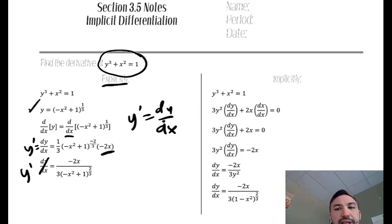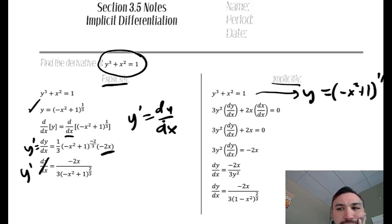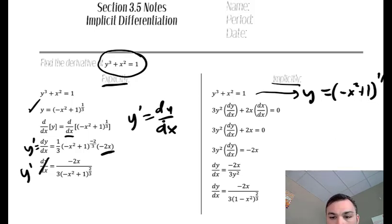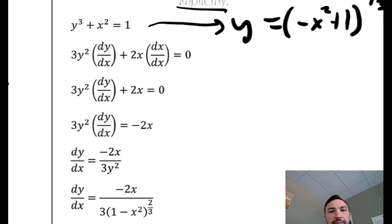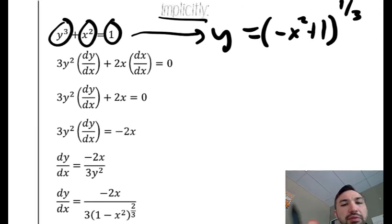So let's look at the same question and see how we would do it implicitly. Instead of solving this for y — although I could solve it for y still, and I might need that later — what we can do is take the derivative of each piece individually: the derivative of this term, then this term, then this term.